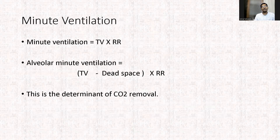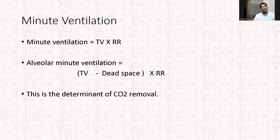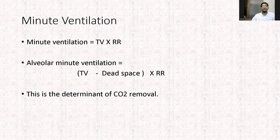Coming to minute ventilation. Minute ventilation is the amount of air that enters the lungs in a minute, calculated by multiplying tidal volume by the respiratory rate. Only a part of this volume takes part in gas exchange — that is the alveolar minute ventilation, obtained by subtracting dead space from tidal volume and multiplying by respiratory rate. This is the determinant of carbon dioxide removal. An increase in alveolar minute ventilation causes carbon dioxide washout; a decrease causes retention of carbon dioxide — it is inversely proportional.